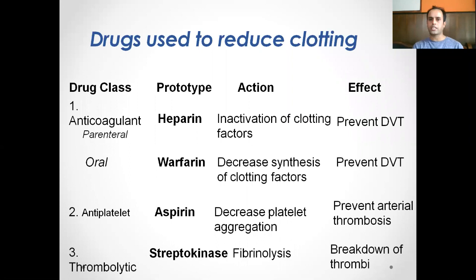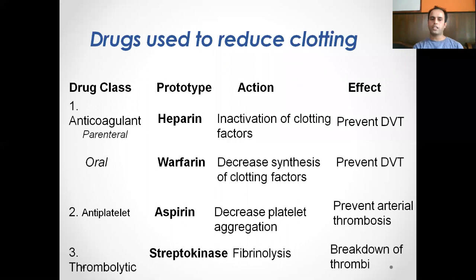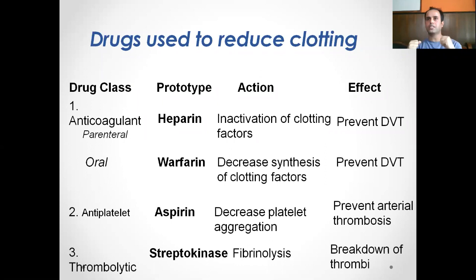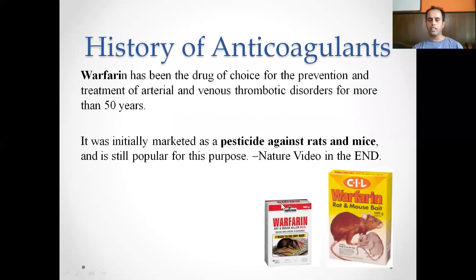There are three major classes of drugs used to reduce clotting: anticoagulants, antiplatelet drugs, and thrombolytic drugs. Anticoagulants are subdivided into parenteral and oral — the prototype parenteral is heparin and oral is warfarin. The antiplatelet prototype is aspirin and the thrombolytic prototype is streptokinase. Thrombolytics are used when a thrombus is already formed and needs to be broken down. Antiplatelet drugs interfere with platelet plug formation, while anticoagulants act through the coagulation pathway.